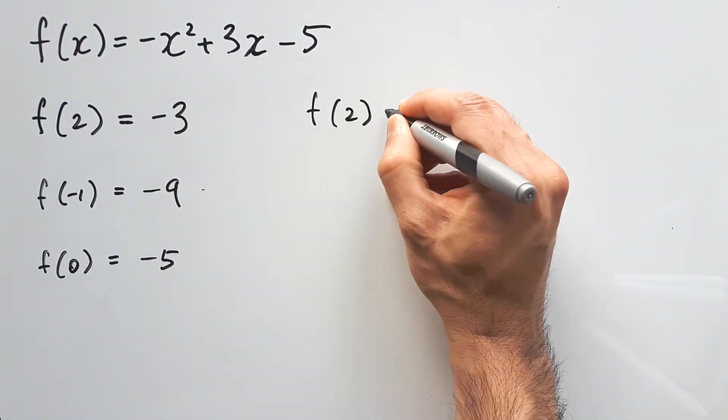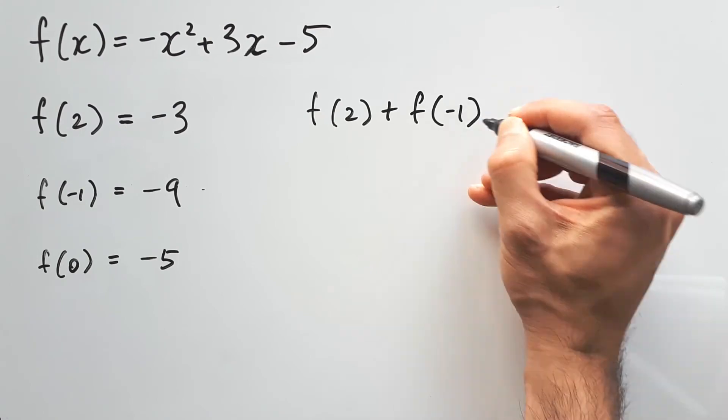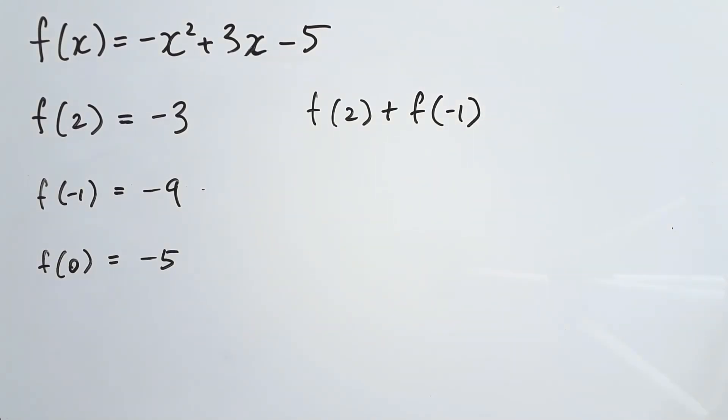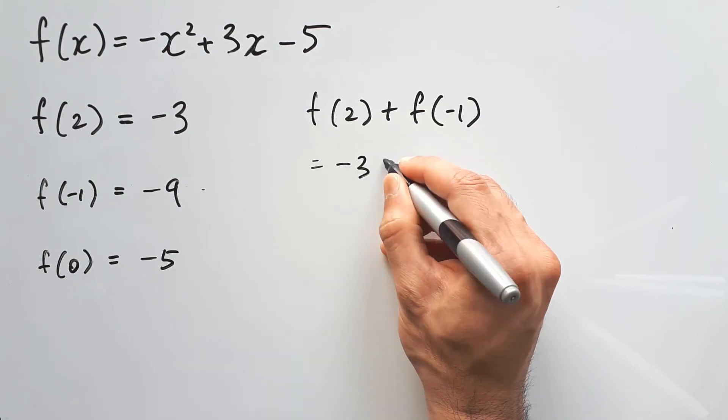Let's say you're asked to find f of 2 plus f of negative 1. You've already found the value of f of 2. We know it's negative 3. And we've done something similar for f of negative 1. And so we can just replace those notations, those titles, for a specific outcome.